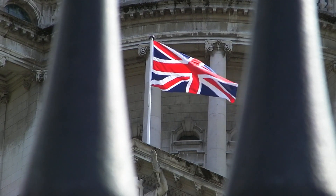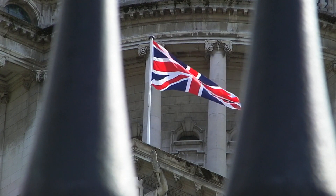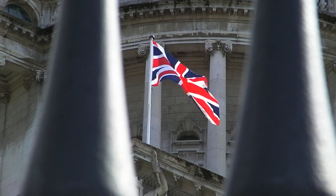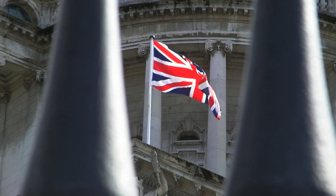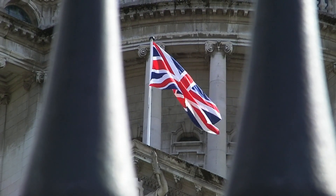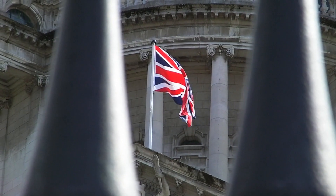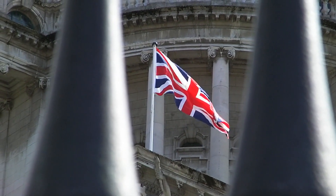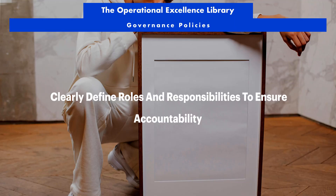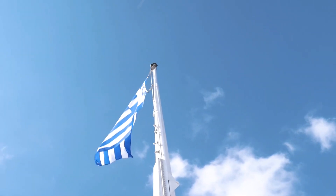The RAGI Framework is a governance tool used to define and allocate roles and responsibilities among stakeholders involved in a project, process, or operational activity. It ensures that each task or activity has a clear owner and that stakeholders understand their specific roles and responsibilities.